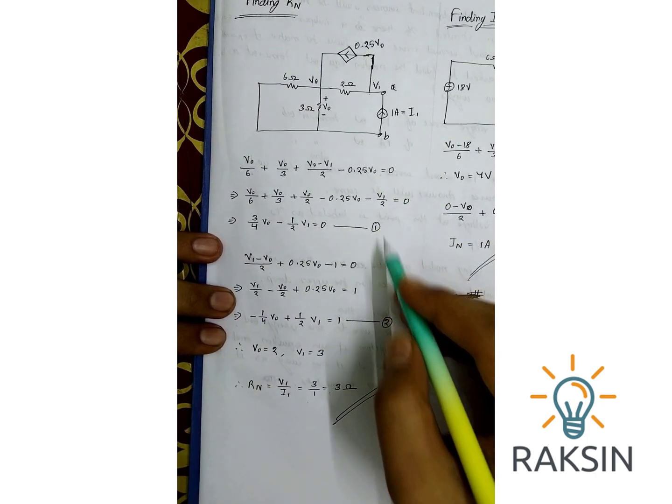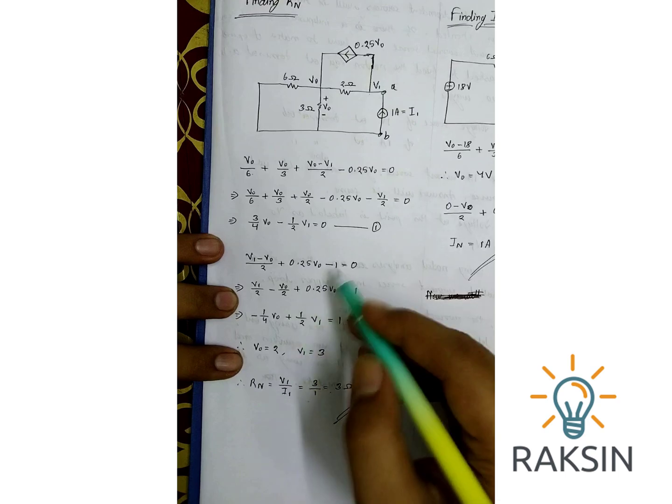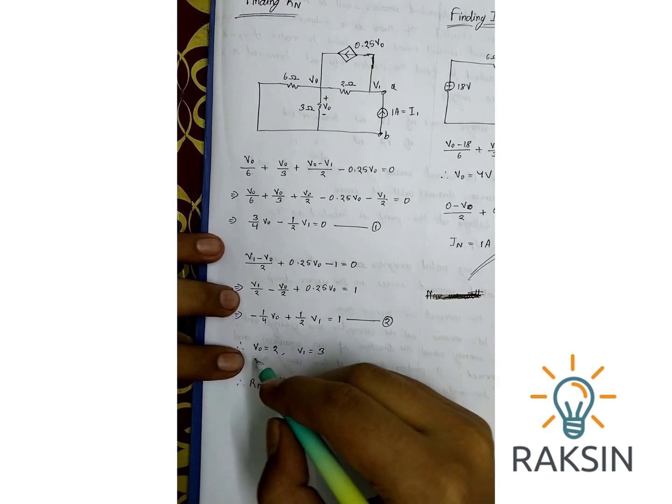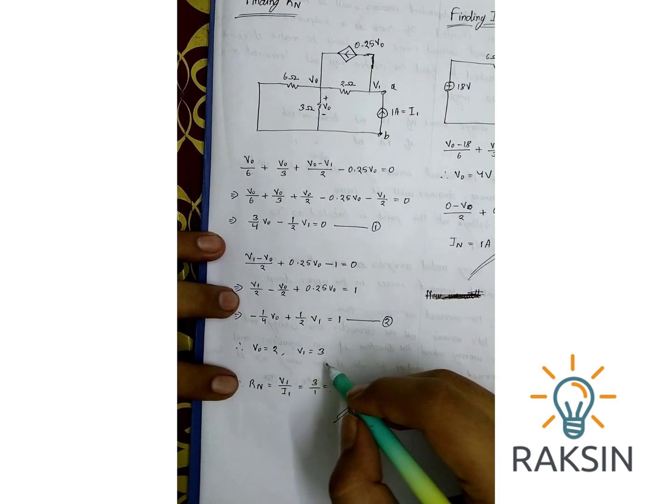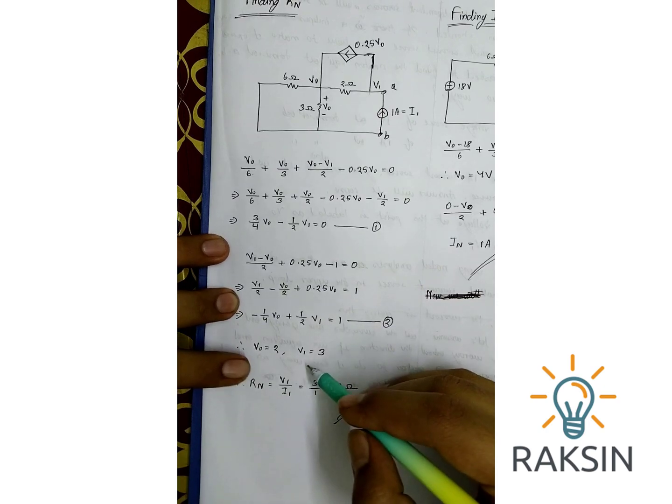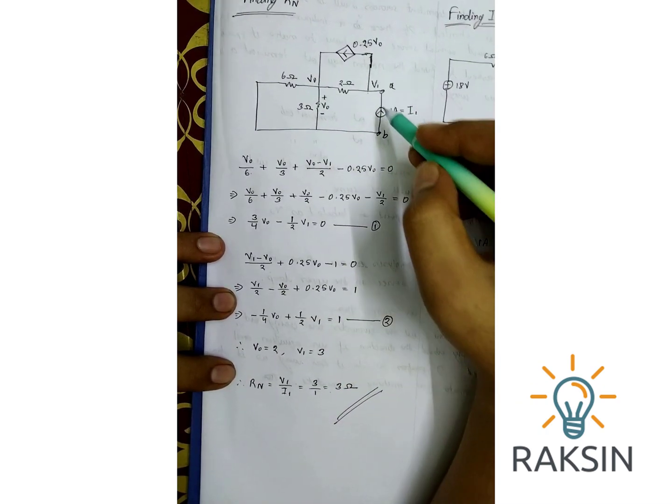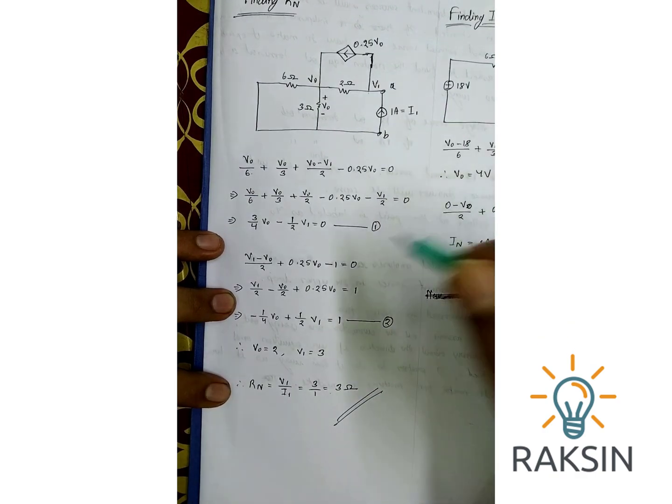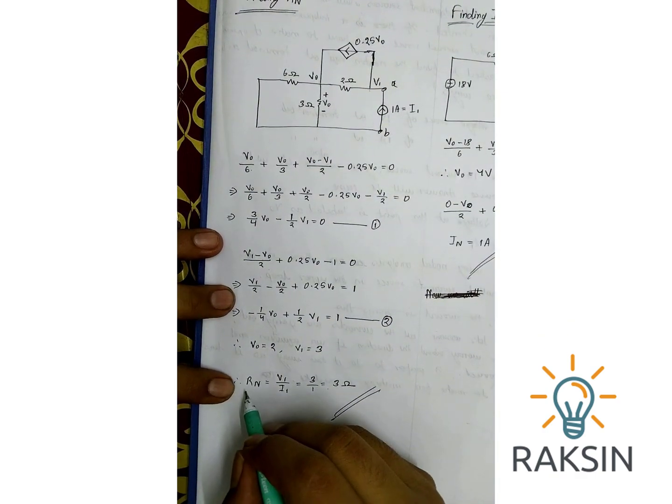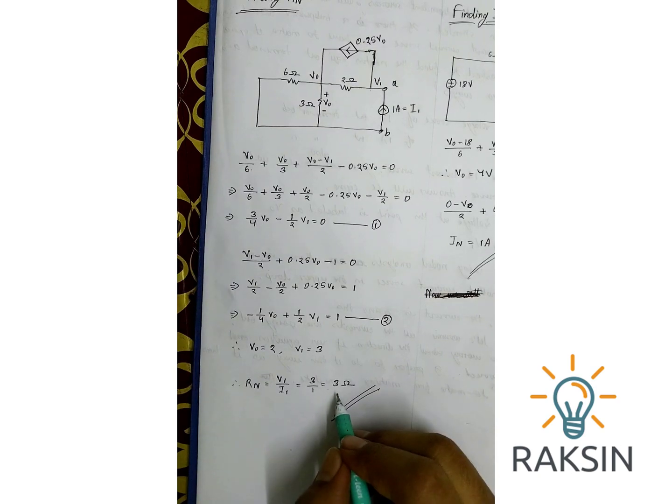Now we have found two equations. Solve it and we will find V0 equal to V1 equal to 3. As V1 is the voltage across this line and the current here is 1 ampere, the input resistance or Rn will be 3 ohm.